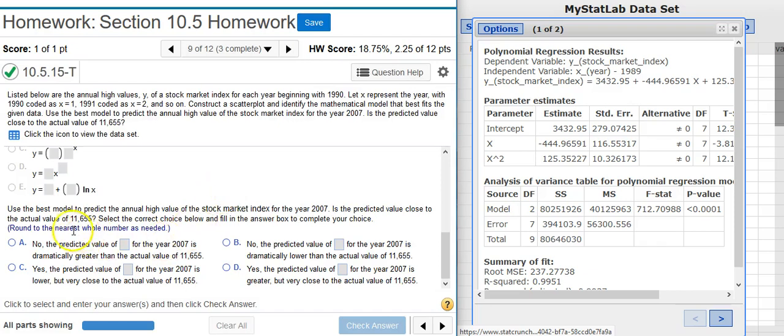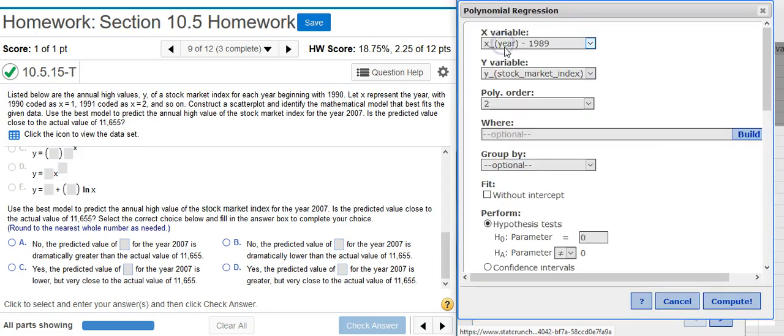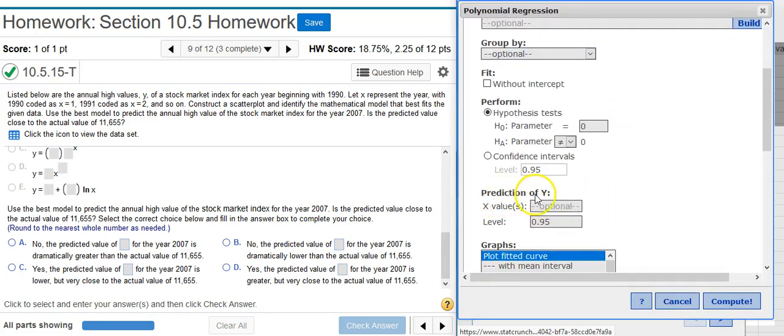Now, the last part of the question asks, use the best model to predict the high value for the stock market index for the year 2007. I can make predictions with the model. I can actually look at this equation and write it out and punch it out on my calculator, or I can have StatCrunch do it for me. Just go back to your options window. Scroll down here and see where it says prediction of y. You put in a value for x and it will calculate that for you in the regression equation. But remember, you used coded years for your model. This is why I hate coded years. Because in order to use the model, you have to put in a coded year. So we just can't put in 2007. We have to change that to a coded year. And we do that by subtracting out the 0 year.